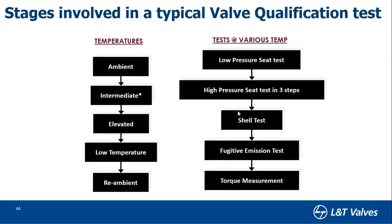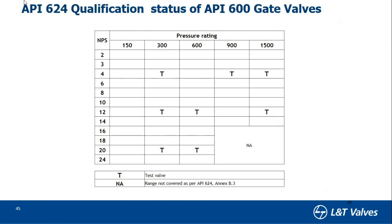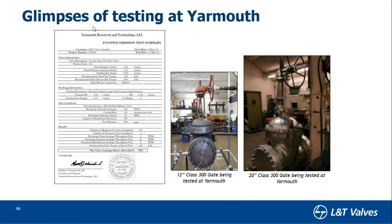The stages involved in qualifying a valve to fugitive emission standards are: low-pressure test, high-pressure test, shell test, fugitive emission test, and torque measurement. For API 624, the valve range is API 600 gate valves from 1 to 24 inch in Class 150, 300, and 600. The standard identifies specific test sizes (e.g., 4-inch Class 300, 12-inch Class 300, 20-inch) — qualifying these sizes qualifies the entire range. Testing is typically done at an independent laboratory, such as Yarmouth in the US. This qualification test is both expensive and time-consuming.